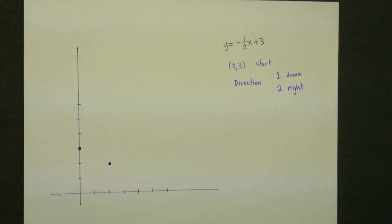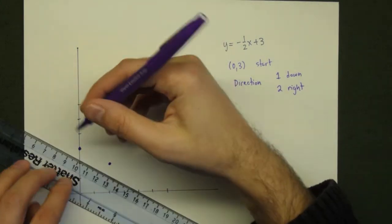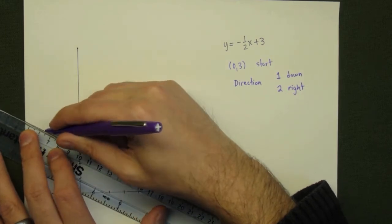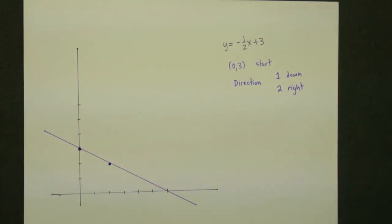Once we have our two points, the straight line will just be the line connecting the two of them. And so, draw a straight line, and this line exactly represents the equation y is equal to negative 1/2x plus 3.